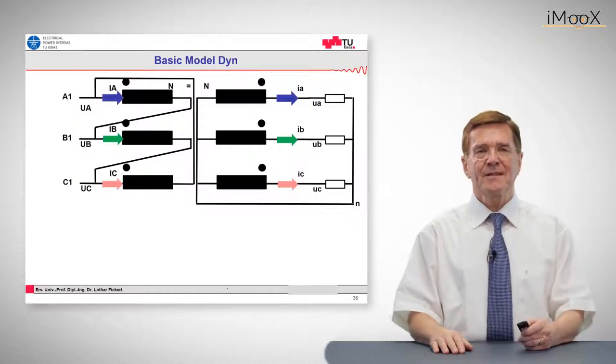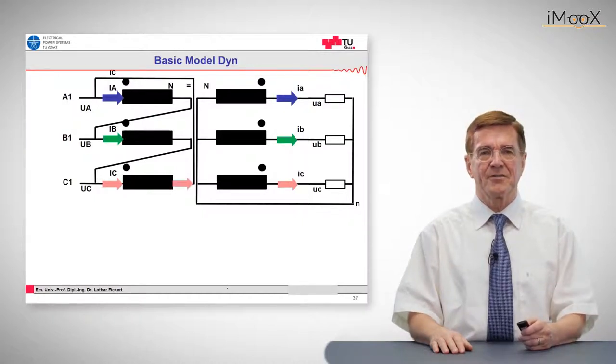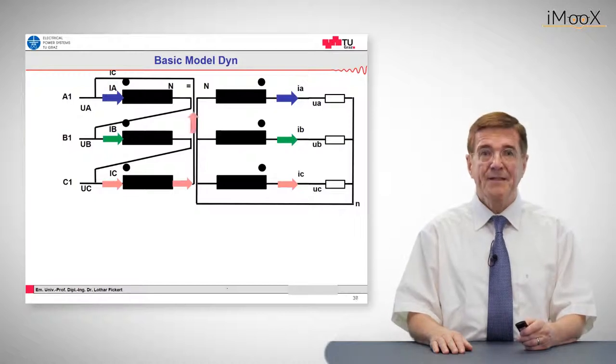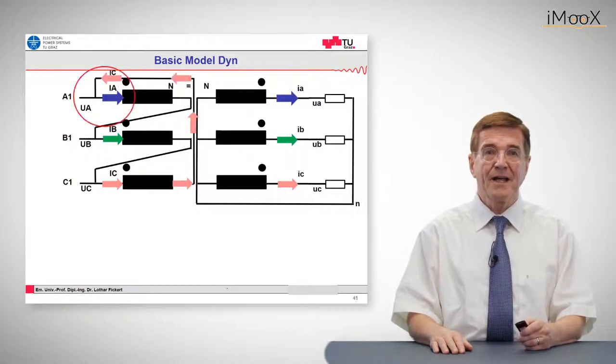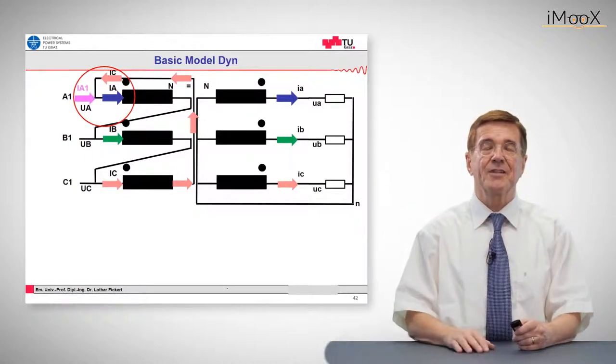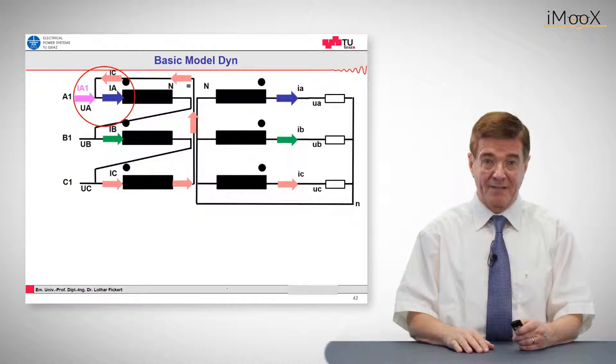And now let's see what the phase C current is going to. So it comes out of this third winding, goes up to the left and here the two currents merge. And they eventually make up the real primary current.